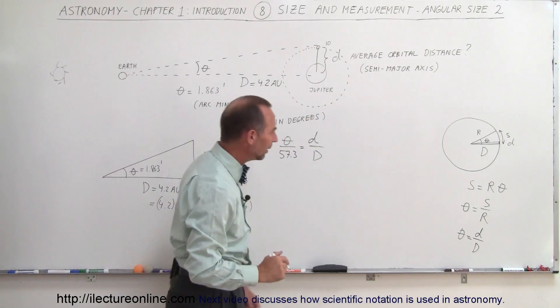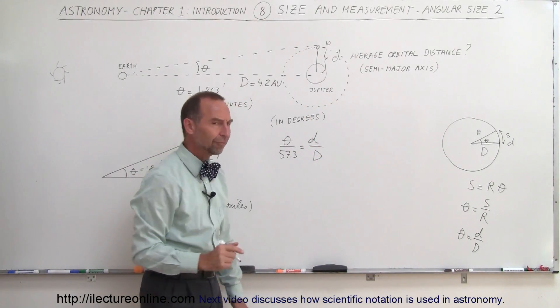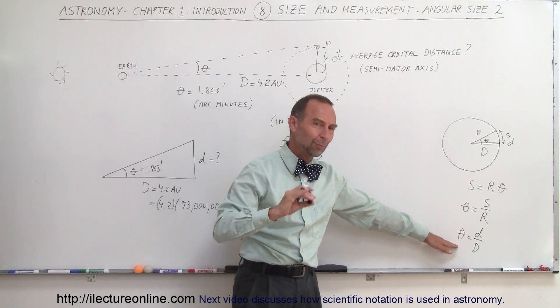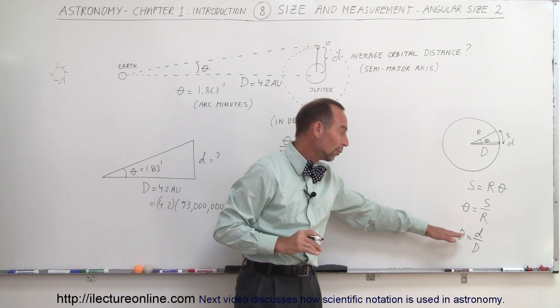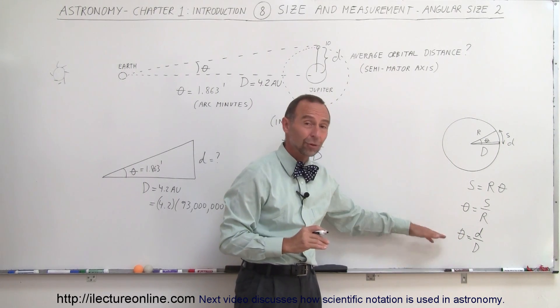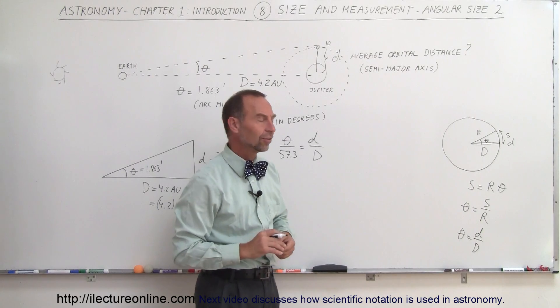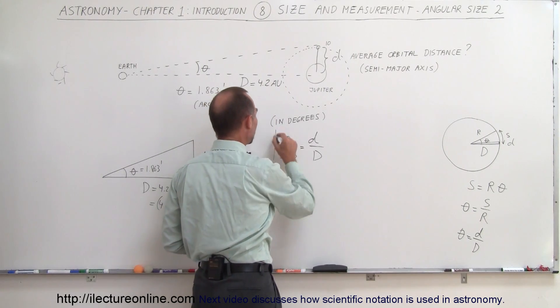Now, you say, well, wait a minute, where does the 57.3 come from? Well, it turns out that this is in radians. And there's about 57.3 degrees in radians, so if we want to then cut this down from radians to degrees, we have to divide that by 57.3 to get degrees. And so this now becomes our equation.